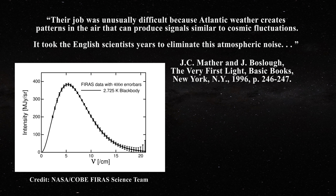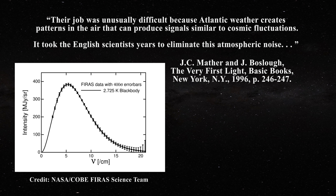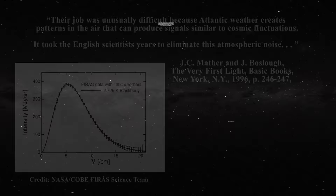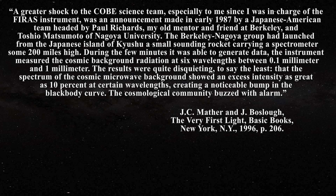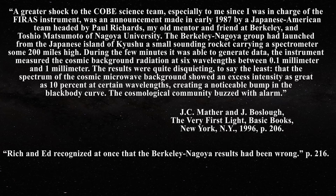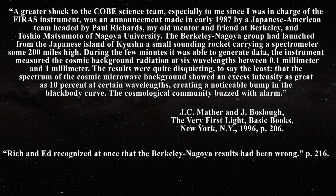The classic example of cosmologists dismissing data is seen with the Berkeley-Nagoya experimental results obtained just before the COBE satellite was launched. This is what John Mather had to say relative to those experiments. After the COBE results came in, Mather would write a follow-up. Nonetheless, the Berkeley-Nagoya experiments provided a vital clue to the astrophysical community that there was a powerful interfering source nearby — but no one paid attention to that warning.